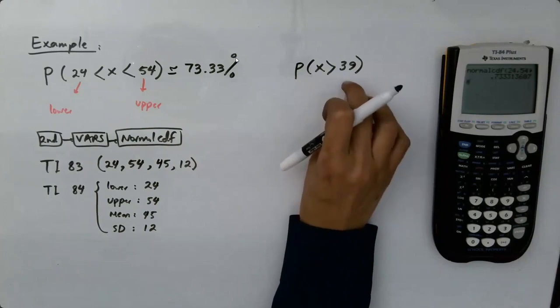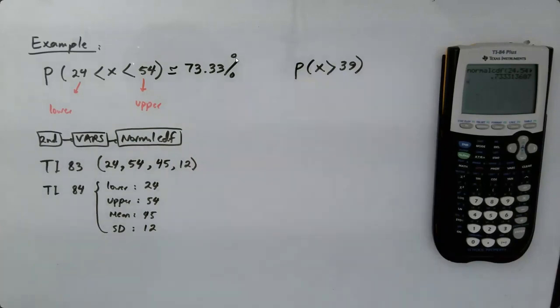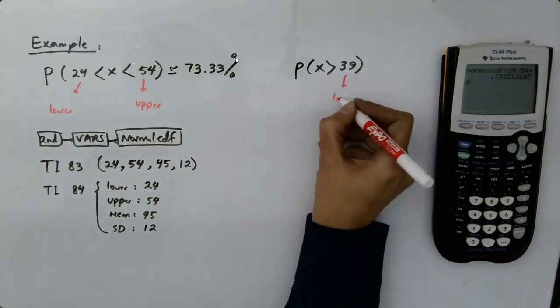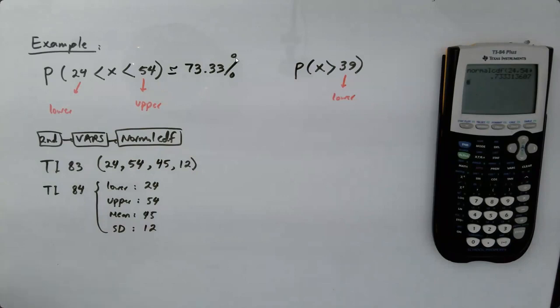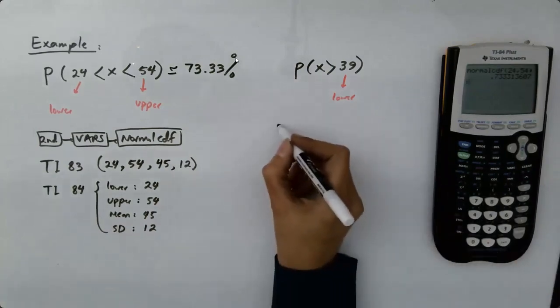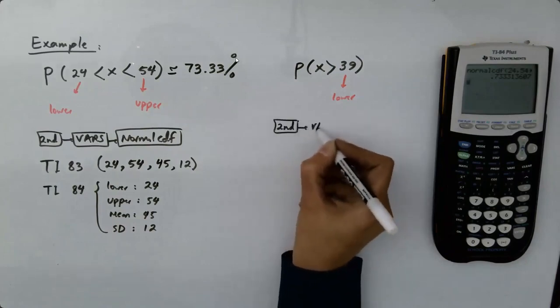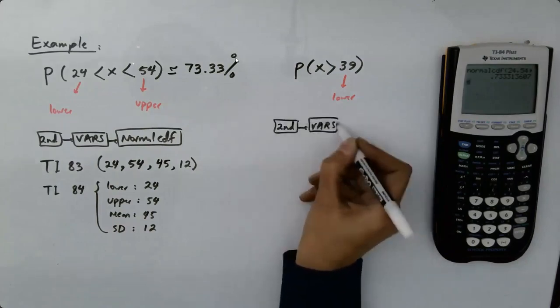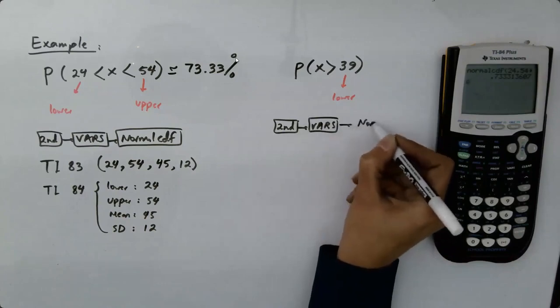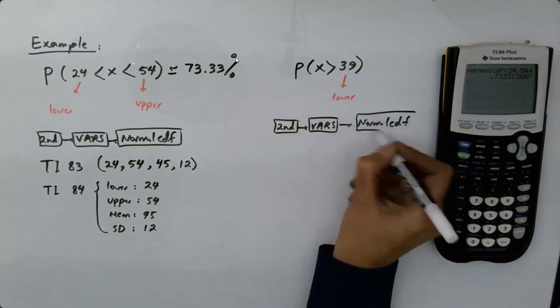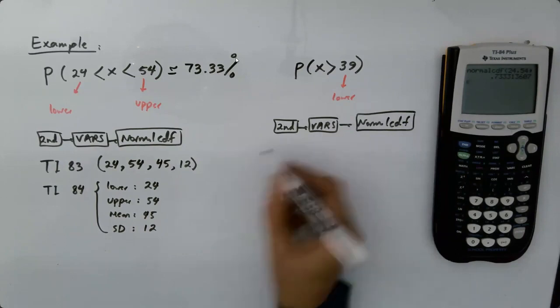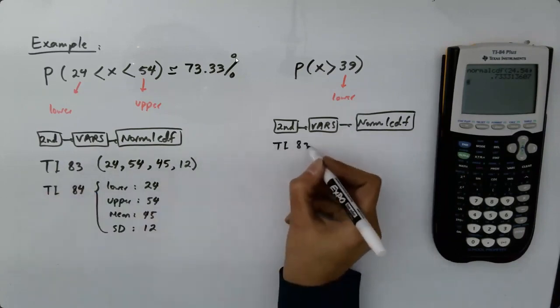More than? It means that your lower limit is given. This is your lower limit. Upper limit, it must be a large positive number, because the graph continues. So, second VARS, normalCDF.